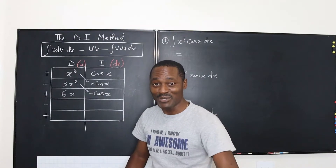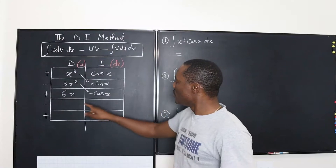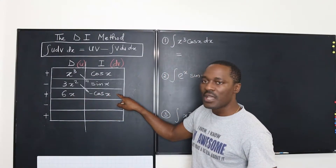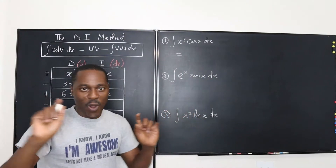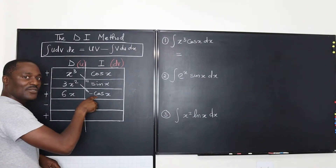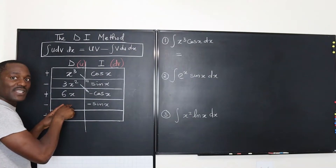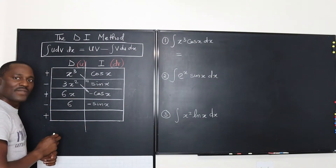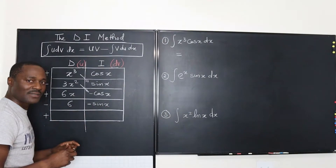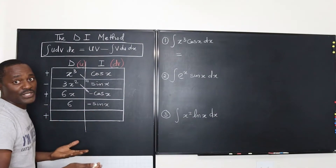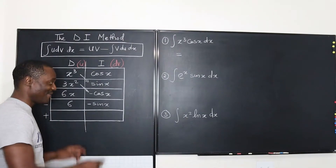We've got 6x. Do we know how to integrate 6x times negative cosine X? Well, we still have to do integration by parts. So why don't we just do it again? We integrate this again and get negative sine X. And if we differentiate 6x, what do we get? We get 6. Now, do we know how to integrate 6 times negative sine X? Yeah, we definitely do. But why don't we just do it here on the table? We can actually continue integration by parts on this table again for this one, even though we know what the answer is going to be.